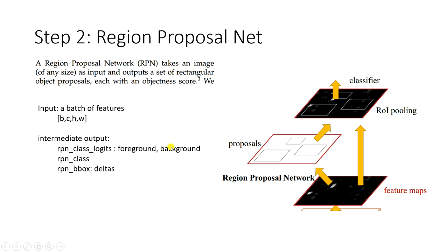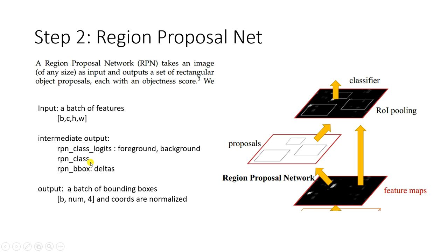The intermediate output includes region proposal class logits — foreground and background scores — where the class is whichever score is bigger. The bounding box output is not coordinates directly; they are deltas — delta of coordinates. I'll explain what these deltas mean shortly. Then we perform operations to get our final bounding boxes in the format: batch × number of boxes × 4 coordinates, where coordinates are normalized between 0 and 1.